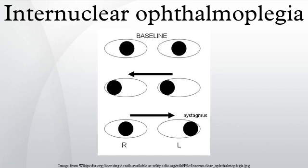Additionally, the divergence of the eyes leads to horizontal diplopia. That is, if the right eye is affected, the patient will see double when looking to the left, seeing two images side by side. Convergence is generally preserved.